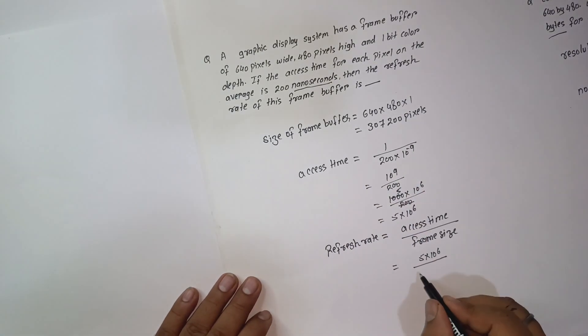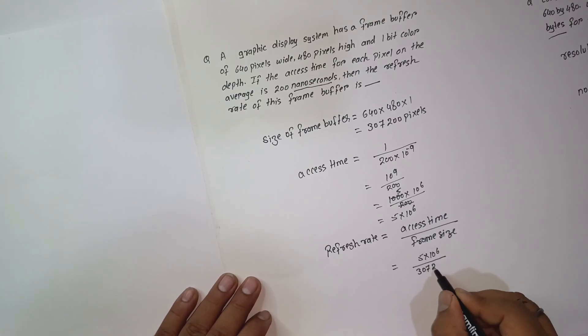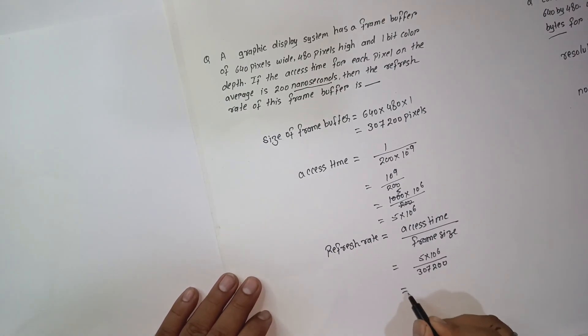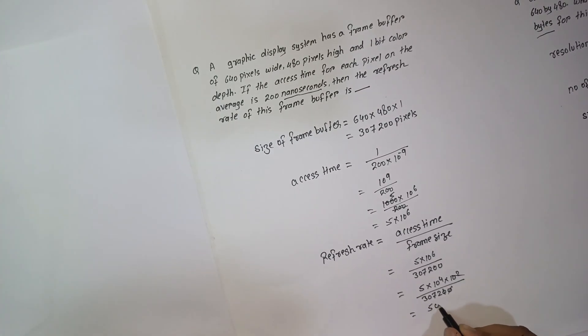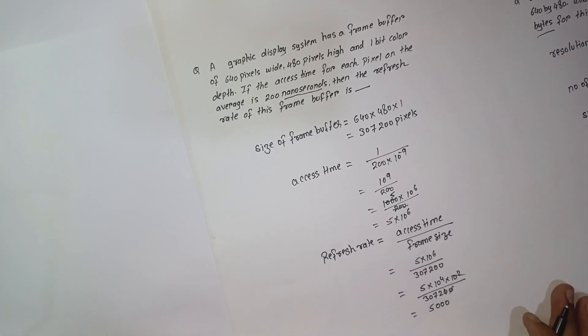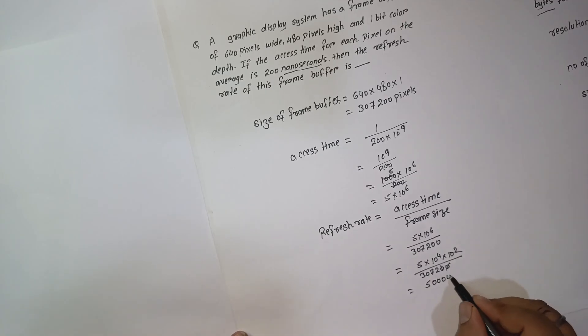The size is 307,200. That is 5 into 10 raise to 4 into 10 raise to 2, which is 307,200. Now it is like 5000 divided by 3072.